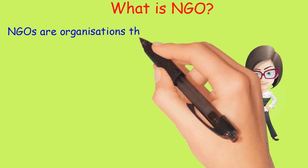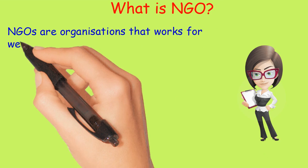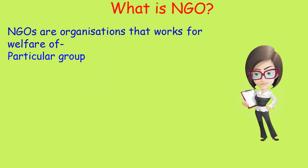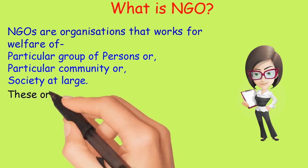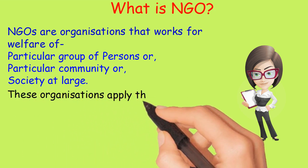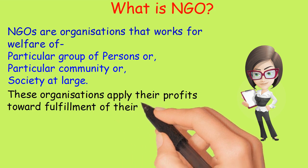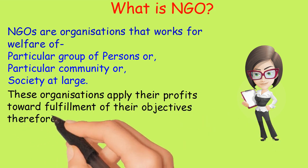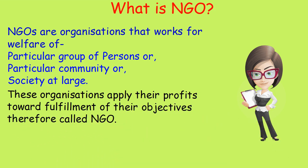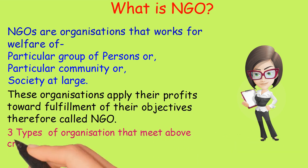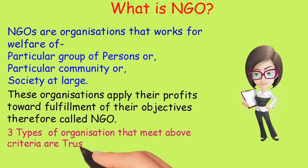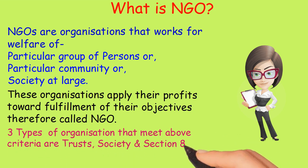What is NGO? NGOs are organizations that work for the welfare of a particular group of persons, a particular community, or society at large. These organizations apply their profits toward the fulfillment of their objectives, and therefore are called NGOs. Three types of organizations that meet the above criteria are Trusts, Society, and Section 8 Company.